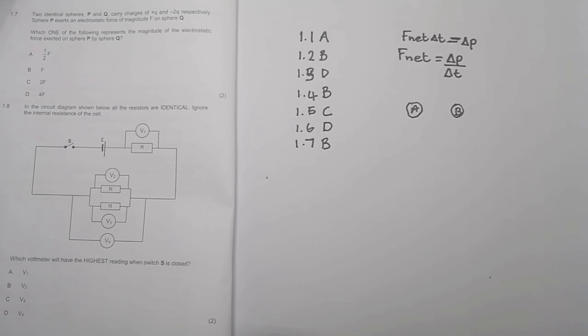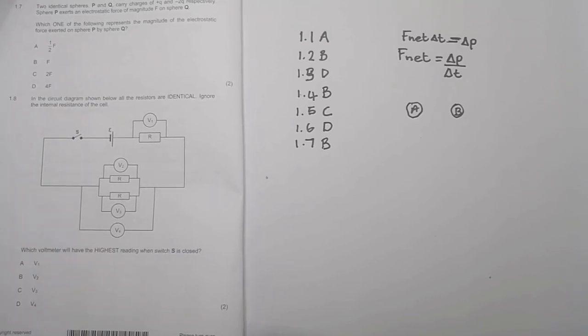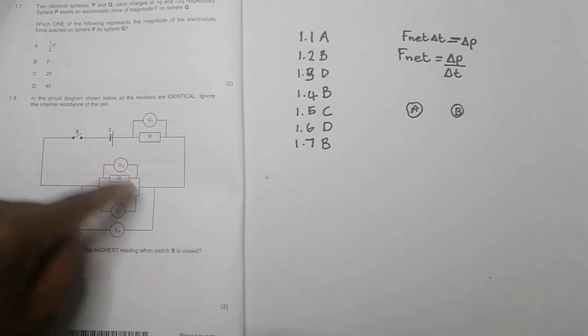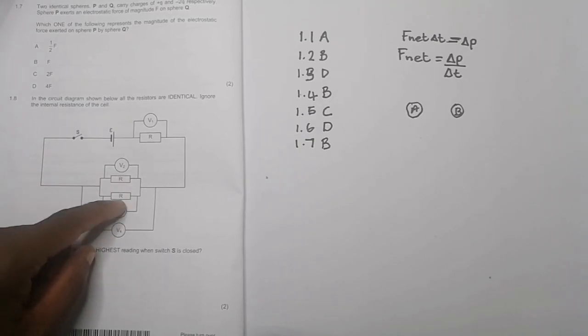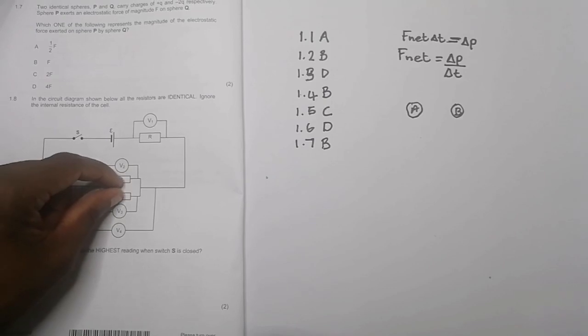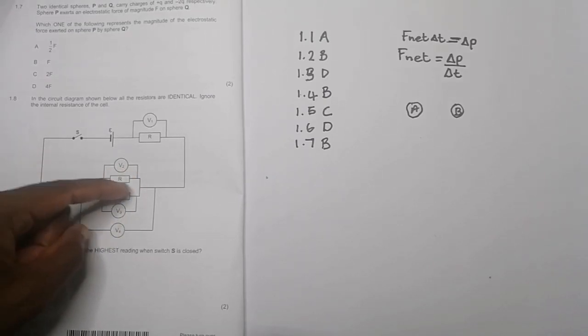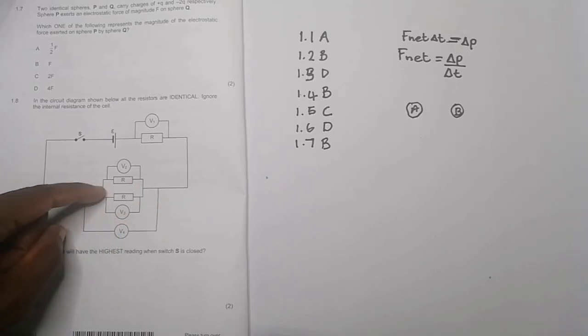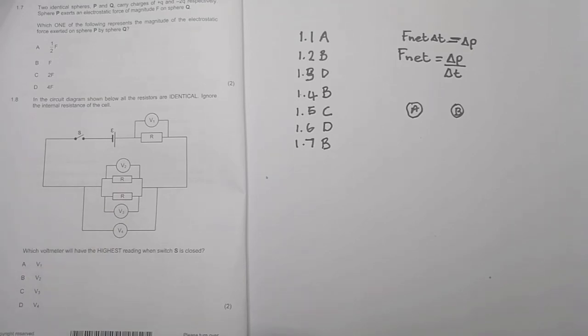In the diagram shown below, all the resistors are identical. Ignore the internal resistance of the cell. Which voltmeter will have the highest reading when switch S is closed? We've got resistors in parallel there. Whenever you connect resistors in parallel, it decreases the effective resistance. So these two resistors in parallel would be R over 2, a half of R. That one would still be R.